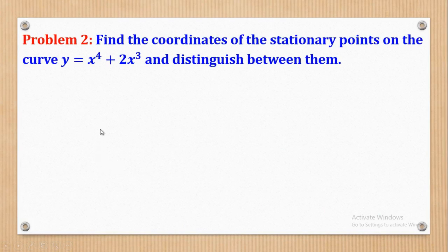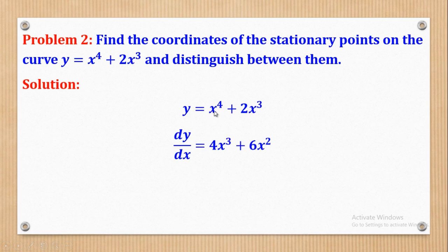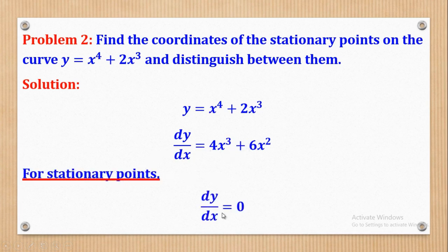We now go to Problem 2: find the coordinates of the stationary points on the curve y = x⁴ + 2x³ and distinguish between them. Differentiating: dy/dx = 4x³ + 6x². For stationary points, the first derivative equals 0.